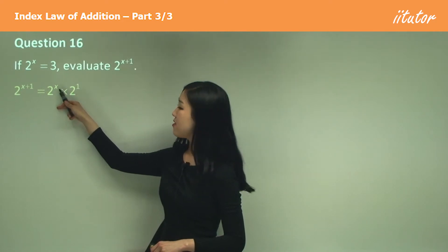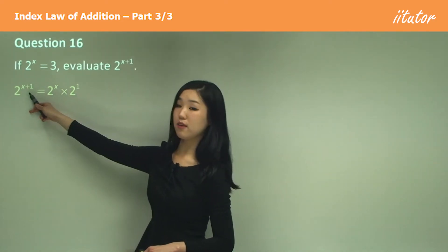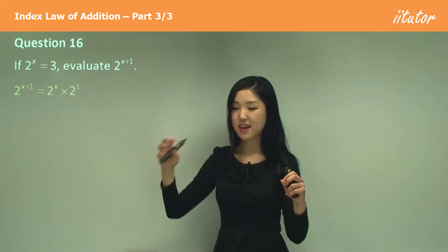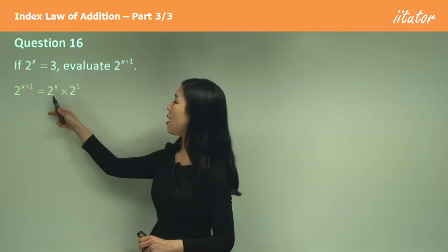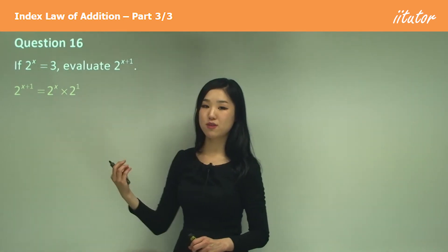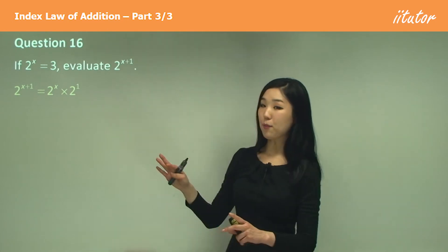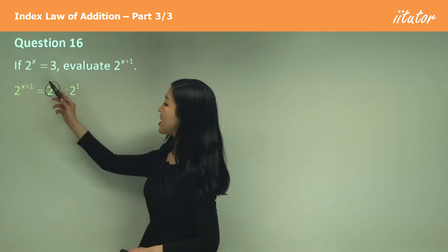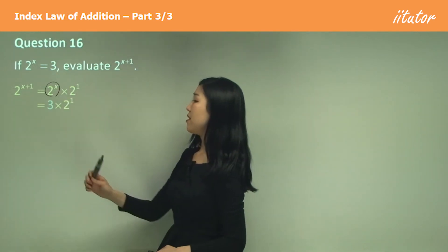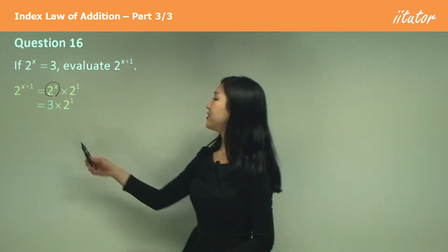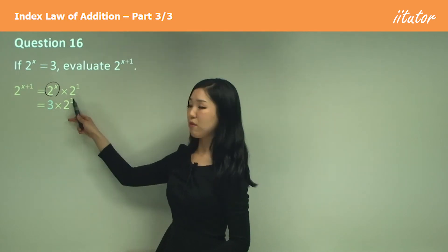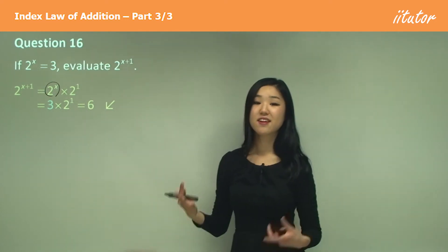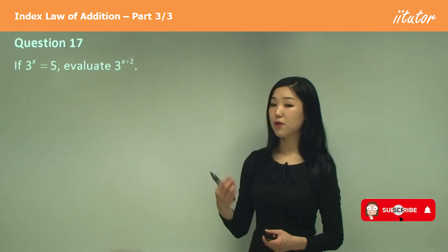So this index x plus 1 can be broken up into x and 1, both placed above base 2 — that's the law of addition of indices. They give us that 2 to the power of x is 3, so that becomes 3 times 2 to the power of 1, which is just 2. So 3 times 2 is 6. The answer is 6. Now for the next one, they give you that 3 to the power of x is 5.